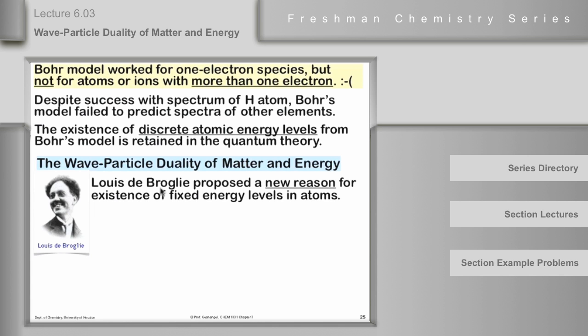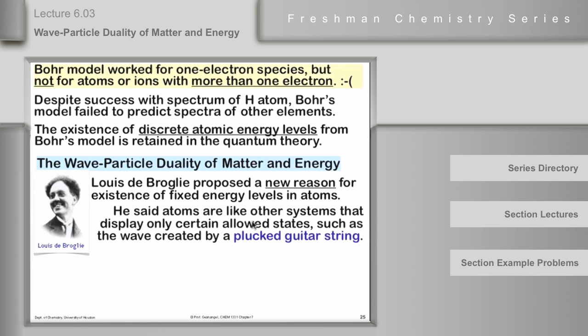And what he was able to do was to find an alternate way to think about electrons and atoms. And he proposed a new reason for the existence of fixed energy levels in atoms. He said that atoms are like anything else which exists in fixed energy levels, and he picked a plucked guitar string as the primary example.